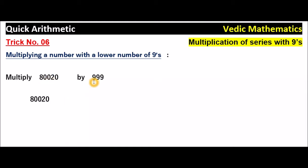And here, just observe how many 9's are there: 1, 2, 3. Three 9's are there. Just to the right side of this given number, put 3 zeros. Three 9's are there, you put 3 zeros. Now subtract this 80,020 from this number.